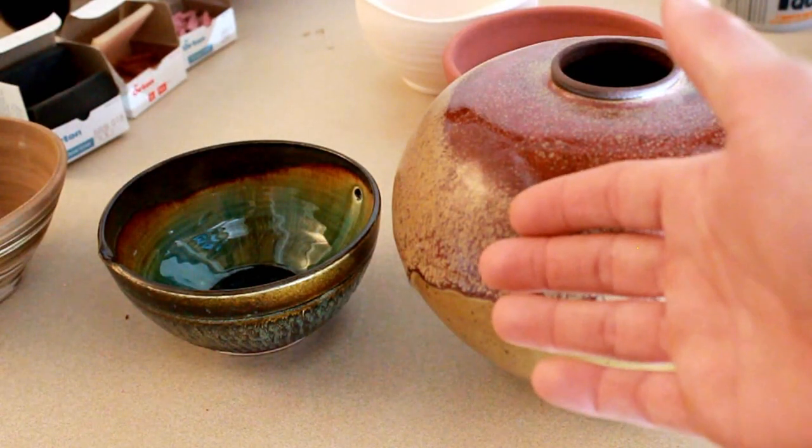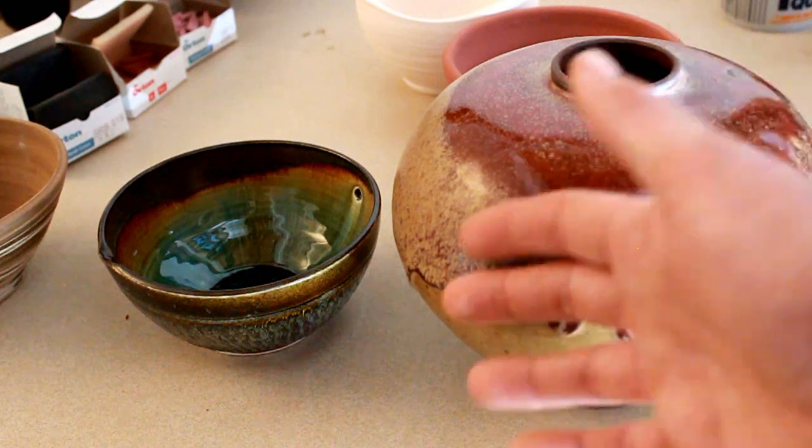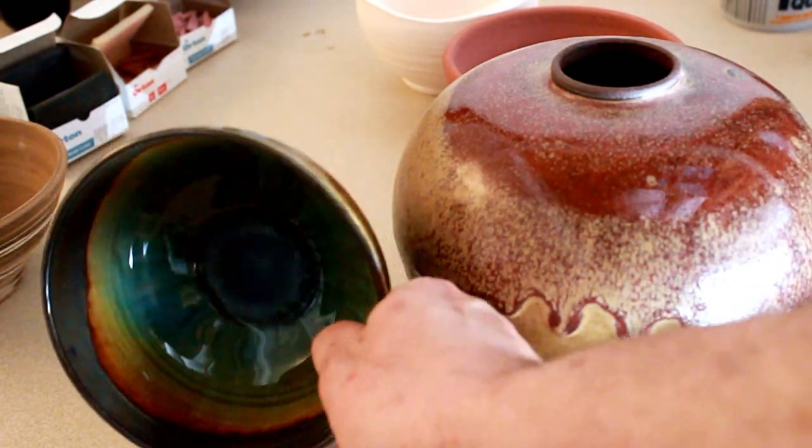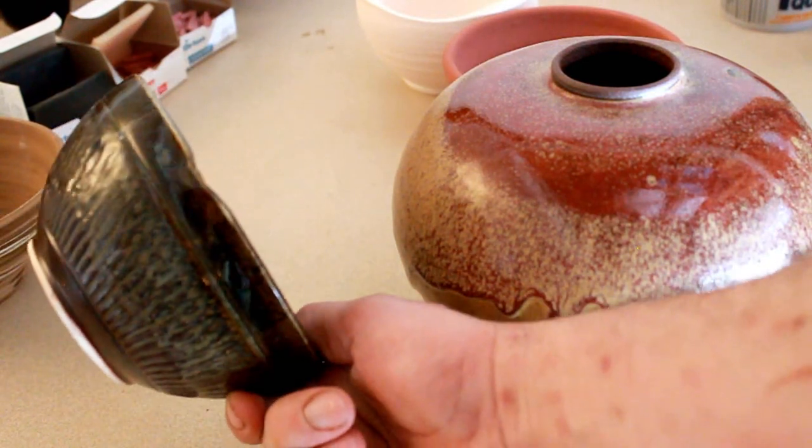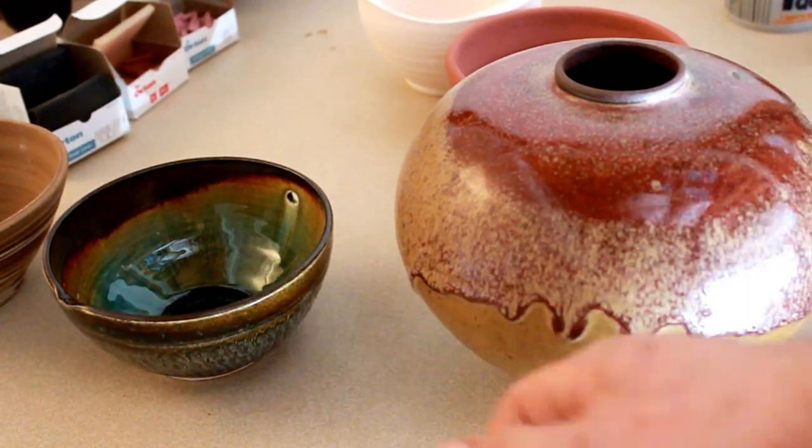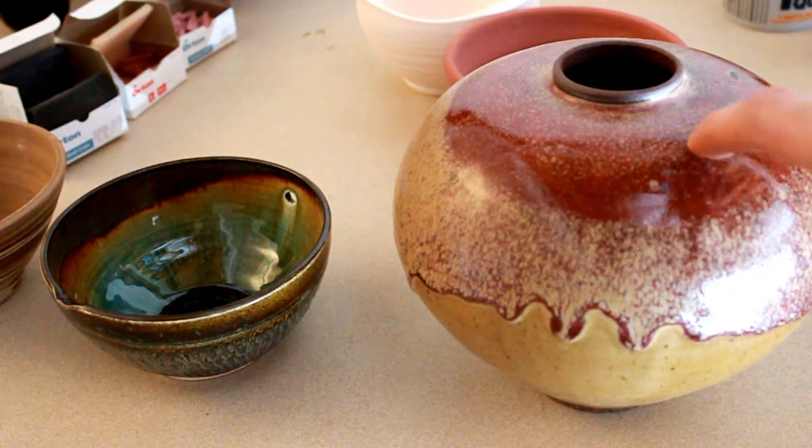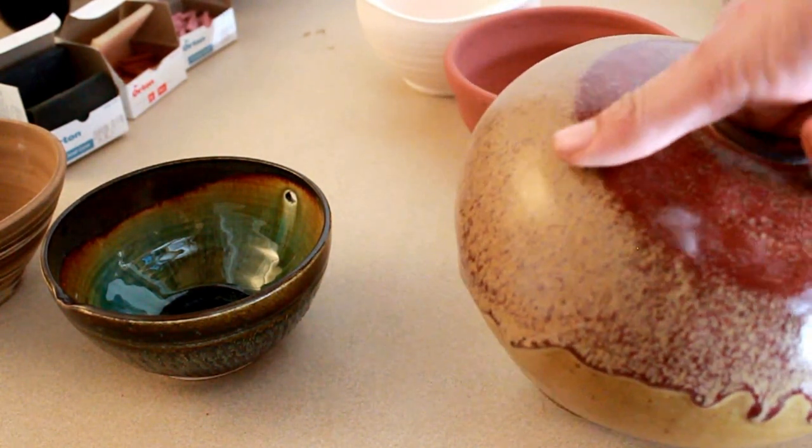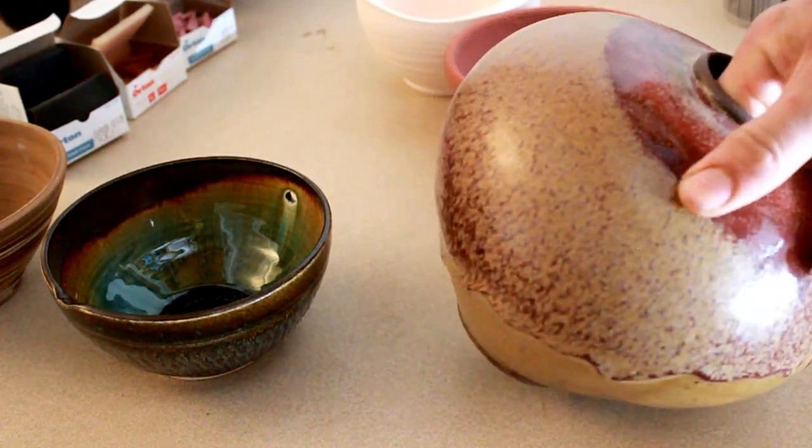And usually different potters stick to different things. For example, I usually work at the cone 5-6 oxidation scale. So a lot of my stuff looks really shiny and bright and exuberant like this. But a long time ago, I used to stick to the cone 10 reduction scale. And all my stuff was a lot less controllable and it looked a lot like this. But it still came out these very natural, beautiful colors.